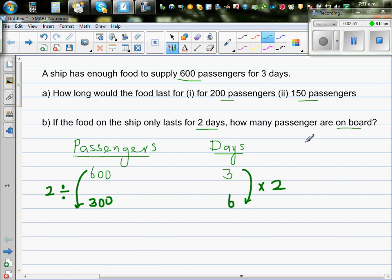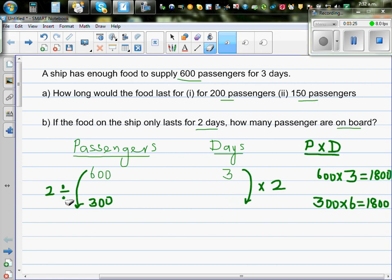Or in a different way, if you think about this, if you multiply passengers, I'll write P times D. P for passenger and D for days. So 600 times 3 is 1800. And 300 times 6 is also 1800. So in an inverse proportion example, the product of the variables will be constant.